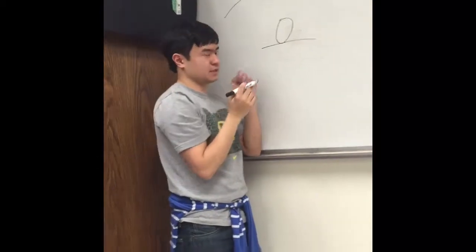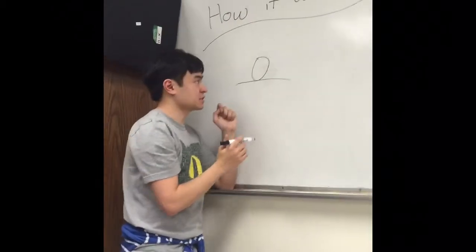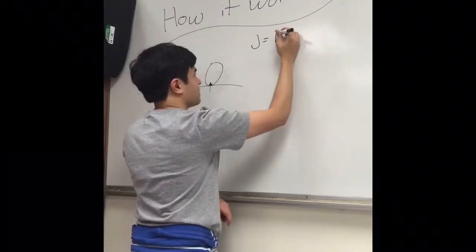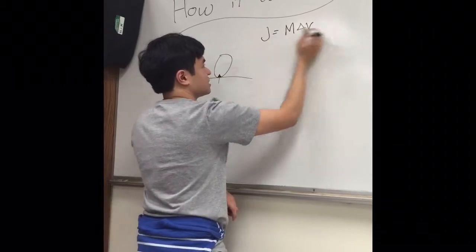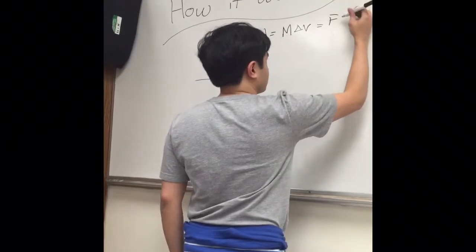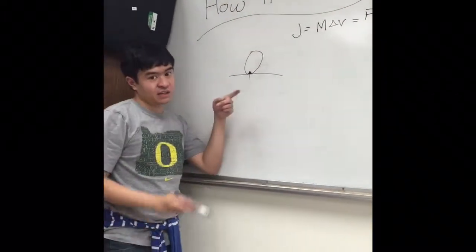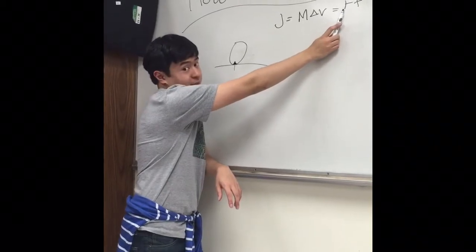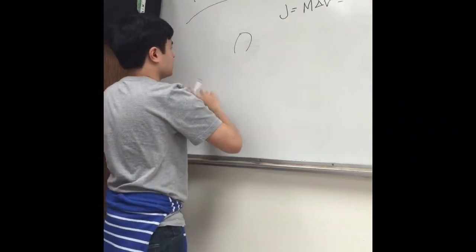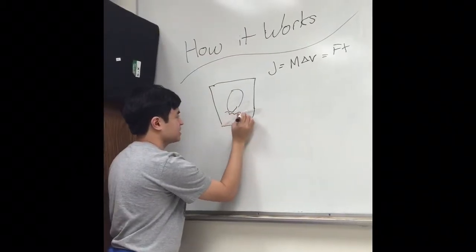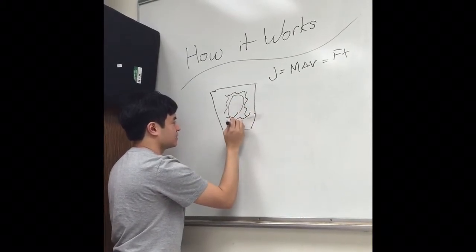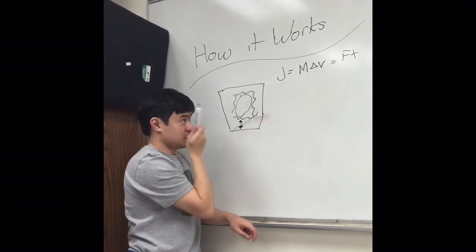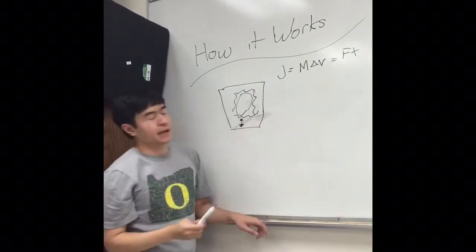When you have an egg by itself and it hits the ground, the egg experiences a lot of impulse force because the ground is pushing up directly against the egg. Remember, impulse force is equal to mass times change in velocity, which is also equal to force times time. If the egg hits the ground directly, its velocity will change in a very short amount of time, so the force is very big. But if you put the egg inside the Fatboy, you have all this cushioning surrounding the egg, which reduces the amount of time it takes for the egg's velocity to change. As a result, the egg experiences less force and is therefore less likely to break.